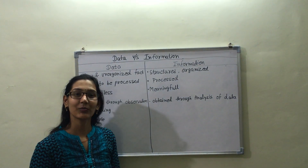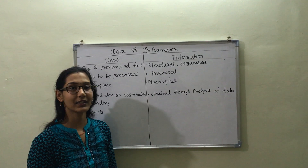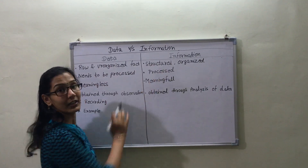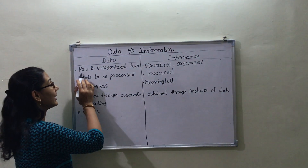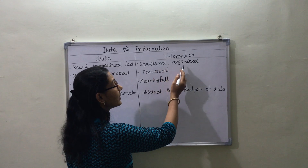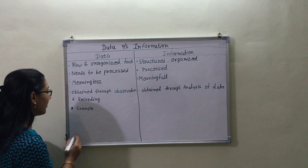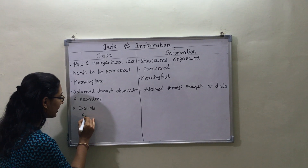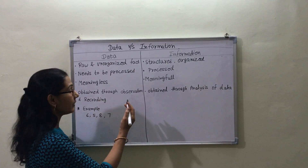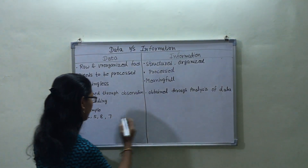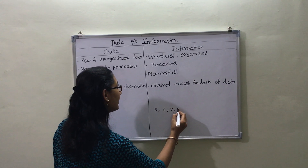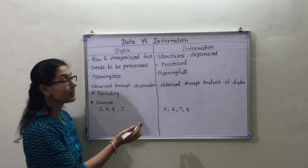Hello everyone, welcome to the channel Knowledge 24. Today we will discuss data versus information. The first point is data is raw and unorganized fact, while information is structured and organized. For example, the numbers are 6, 5, 8, 7. When we sort the data, it becomes information: 5, 6, 7, and 8.